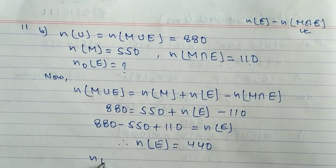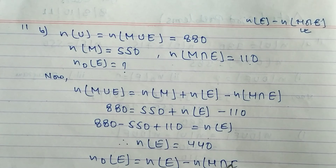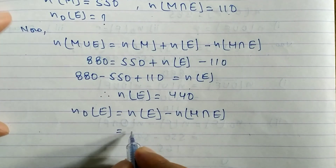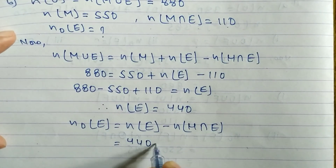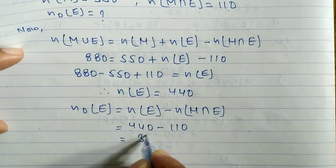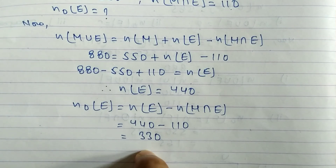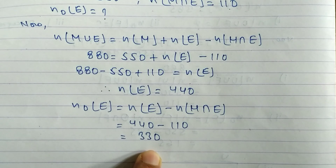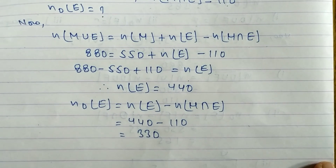Now finding 'only E': n(only E) = n(E) − n(M intersection E) = 440 − 110 = 330. So 330 students scored first class marks in English only.